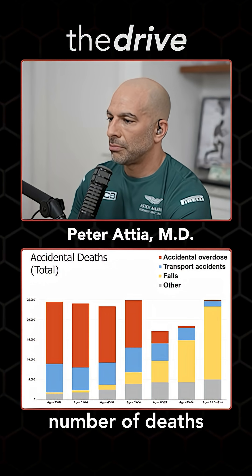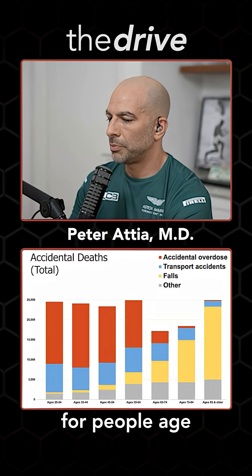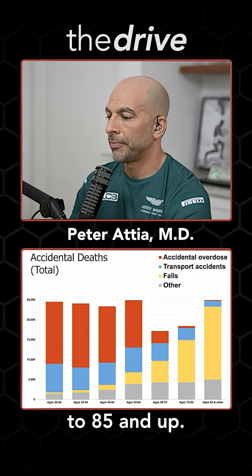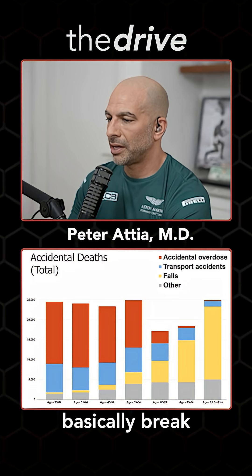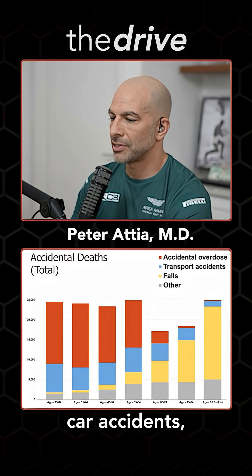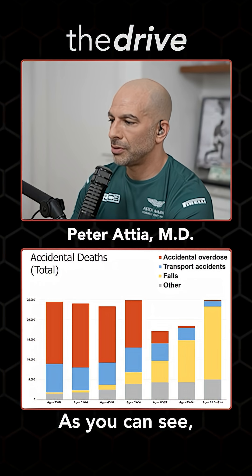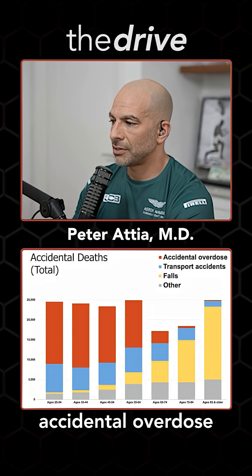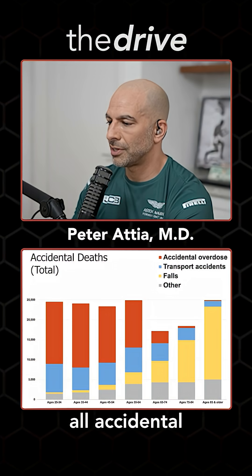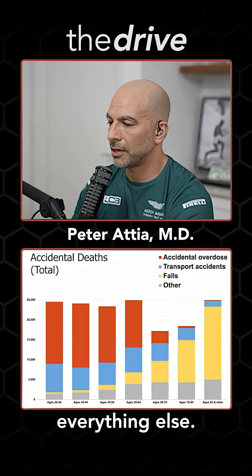Looking at the absolute number of deaths by decade for people age 25 to 35, all the way up to 85 and up, accidental deaths are broken into four categories: overdoses, transportation accidents (mostly car accidents), falls, and everything else. Those first three — accidental overdose, transport deaths, and falls — represent virtually all accidental deaths, so you can almost ignore everything else.